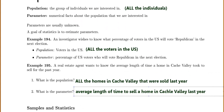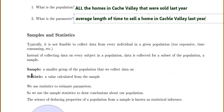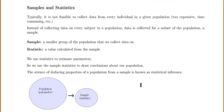Population and parameter both start with P, so you can remember they go together. Sample and statistic both start with S, so you can remember they go together. We'll use statistics to estimate our parameters — we use sample data to estimate data about our entire population. The science of deducing properties of a population from sample data is known as statistical inference.